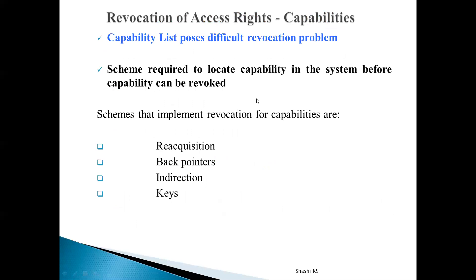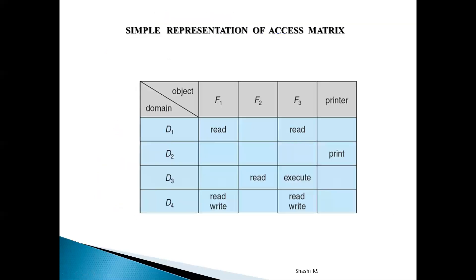In a capability list implementation, the capability list contains domain-wise information. For every domain, it maintains an ordered pair containing the objects as well as the set of operations allowable on the objects. Objects associated with their domains are represented by using their names or addresses, and these object names or pointers to addresses are called capabilities.